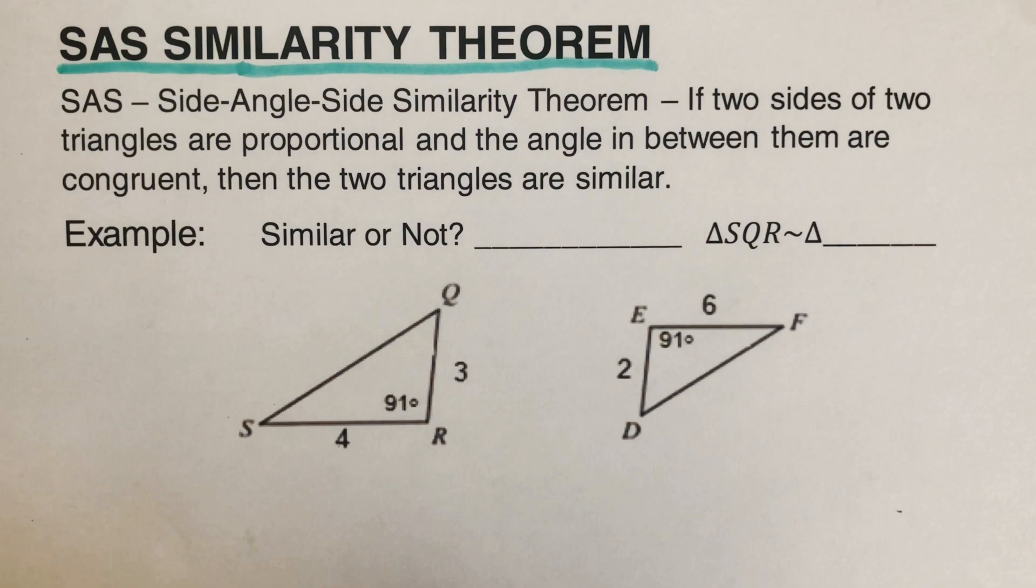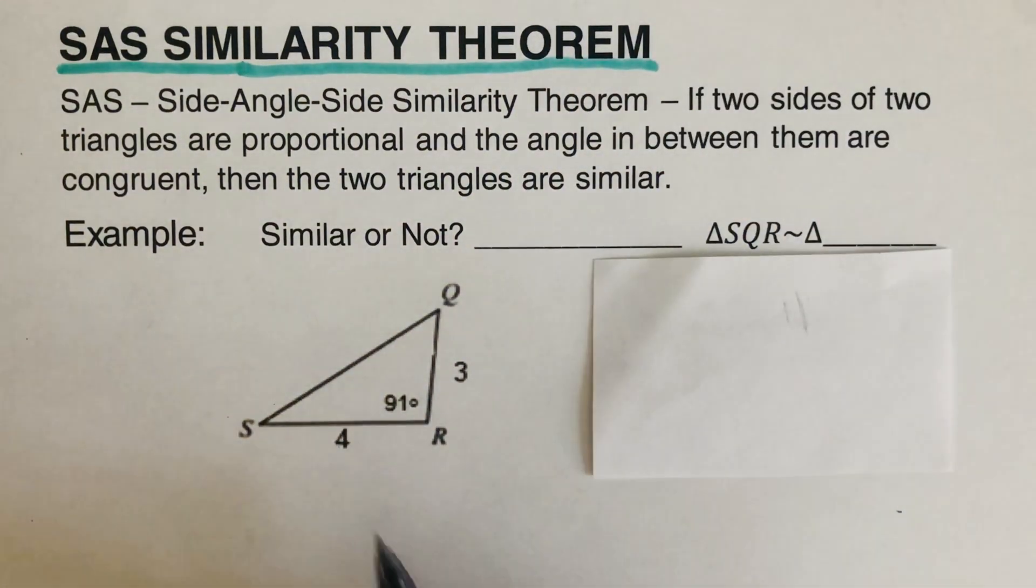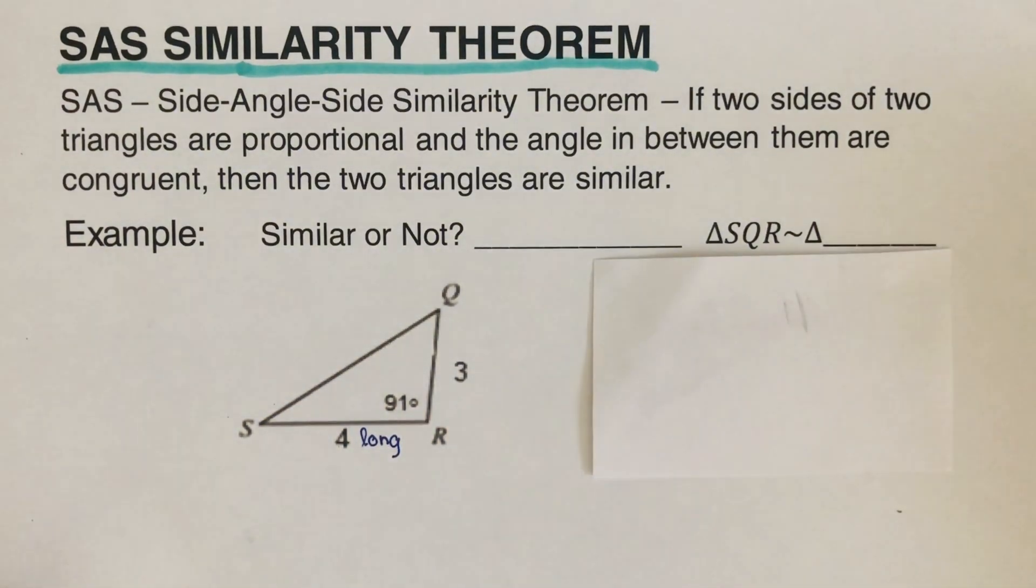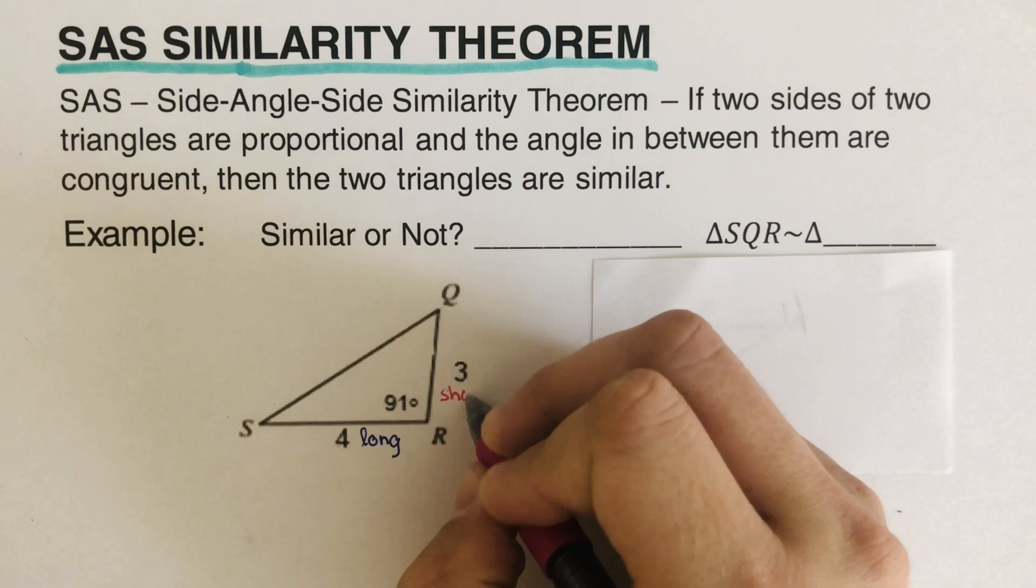So let's determine first. Let's look at this first triangle here. Which of these two sides is the long side? So 4 is the long. So I'm going to label this as long. And then this 3 is the short side. So I will label this as short.